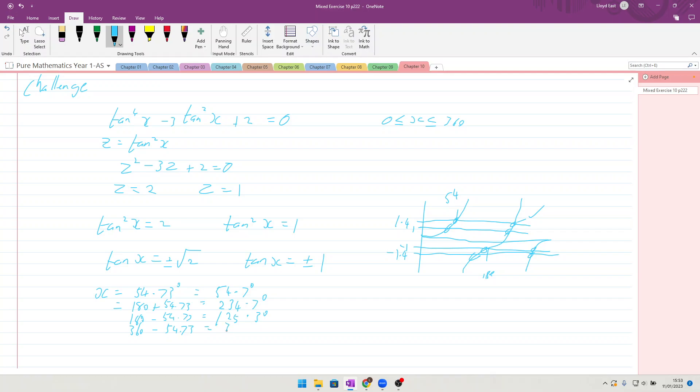So there's four of our solutions all done. Next bit is the ±1, so we end up with x equal to... the inverse tan of 1 is 45°, so we get 45°.